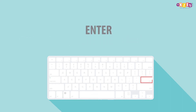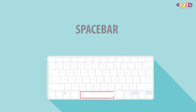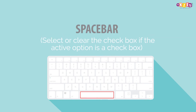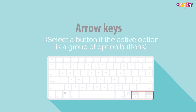Enter: perform the command for the active option or button. Spacebar: select or clear the checkbox if the active option is a checkbox. Arrow keys: select a button if the active option is a group of option buttons.